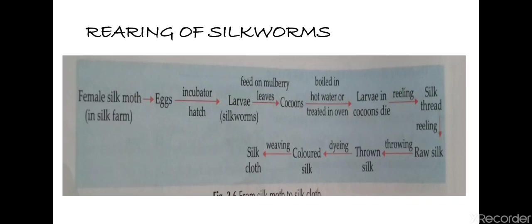In sericulture industries there are a number of occupational hazards. The people working there are adversely affected, mostly with respiratory diseases such as asthma, breathing problems, and bronchitis. This is all about the topic of silk and rearing of silkworms. Thank you.